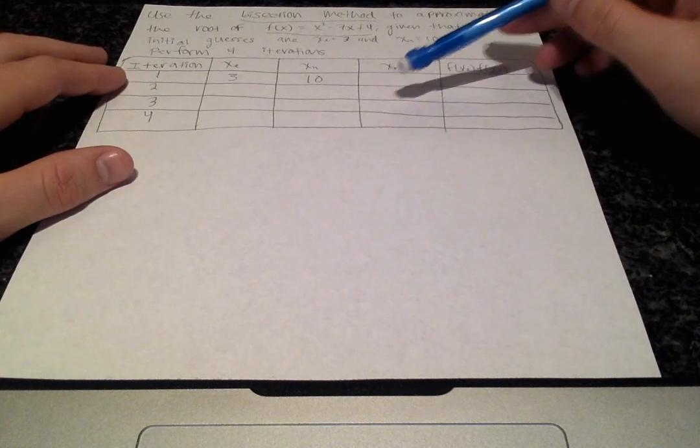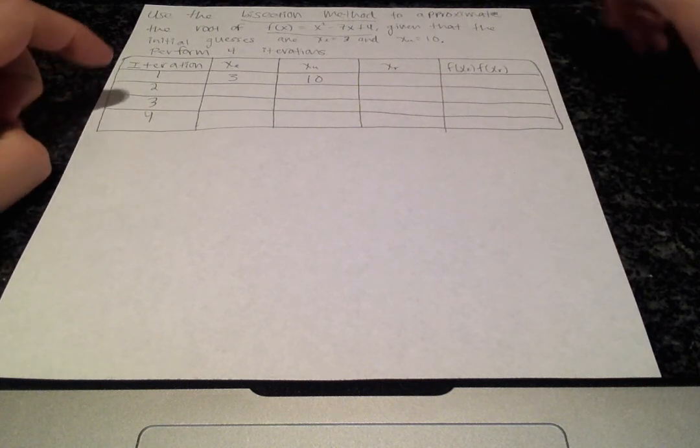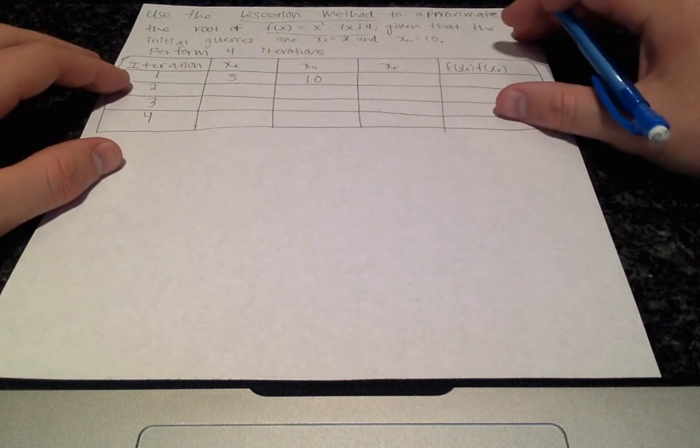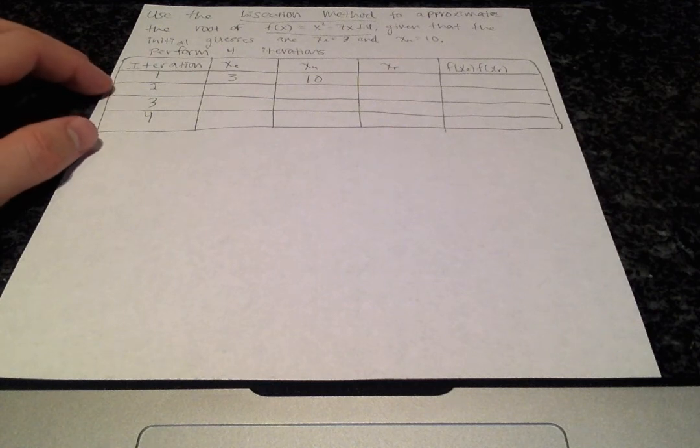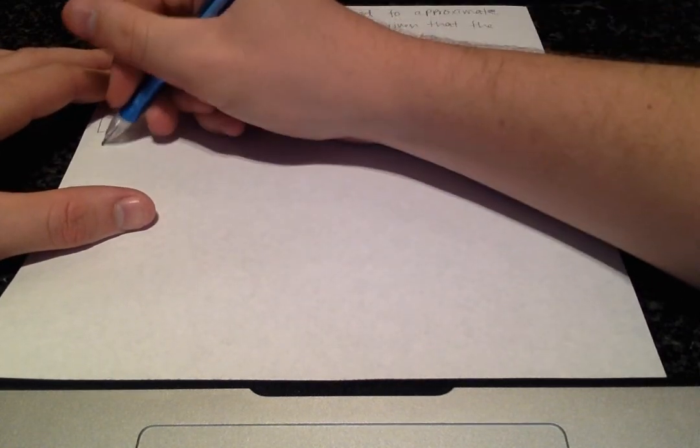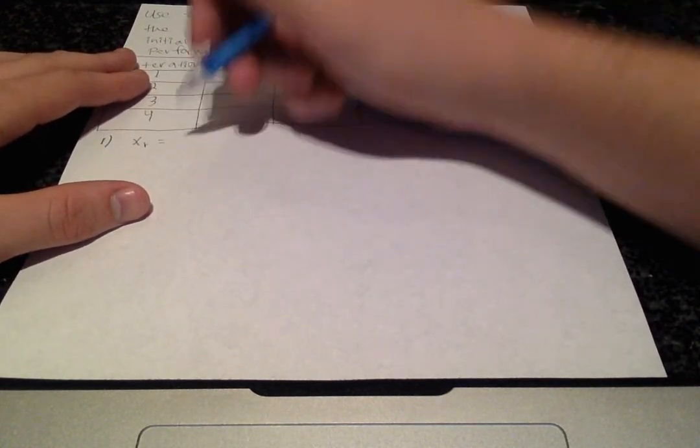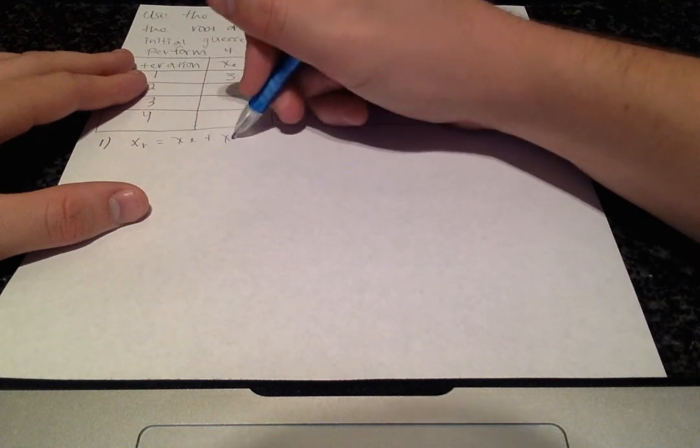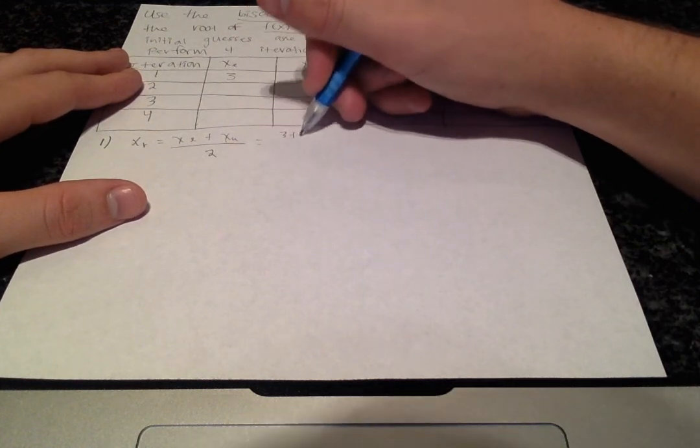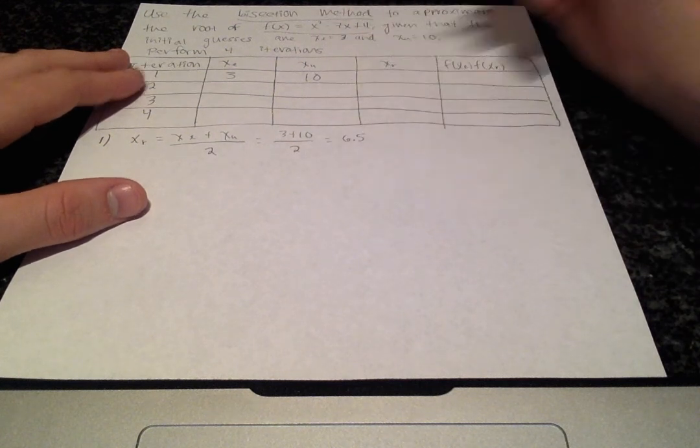Sometimes you'll be provided with tables to keep track of all your calculations, or you can make this table by hand or on the computer. Alright, we'll get started. The first step of the bisection method is to calculate your xr value, which is your lower limit plus your upper limit divided by 2. In this case, 3 plus 10 divided by 2 is 13 divided by 2 or 6.5. I'll fill that in.